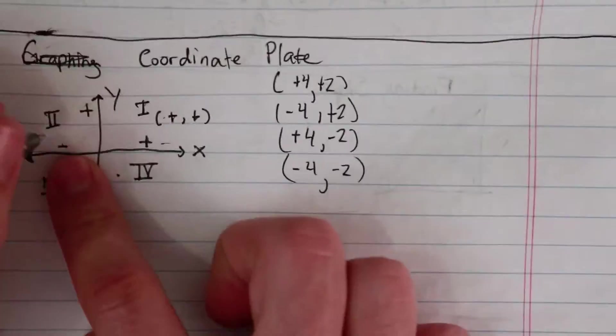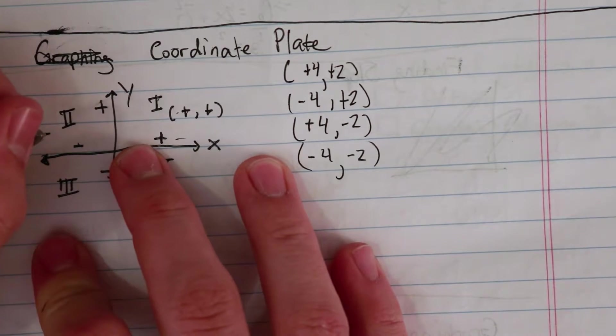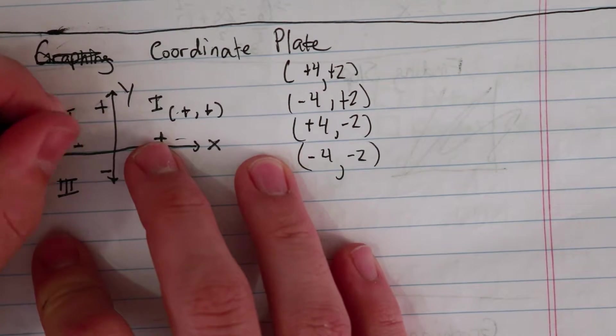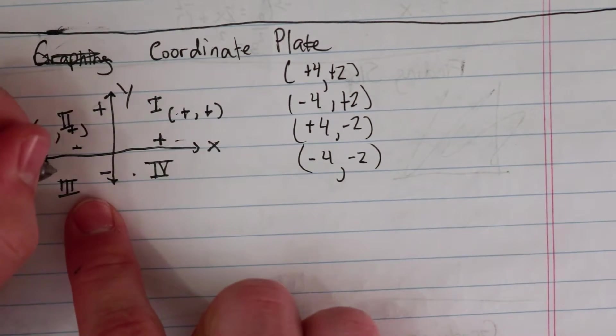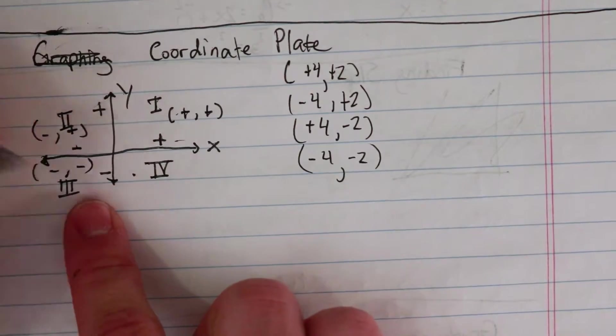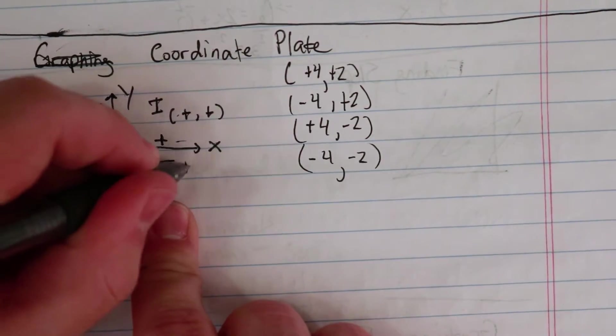And what quadrant do they go in? So quadrant number two is going to have a negative number and then a positive number. Quadrant number three is negative, negative. And quadrant four is positive, negative.